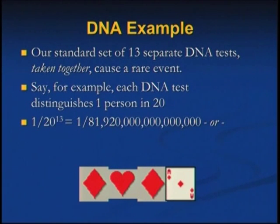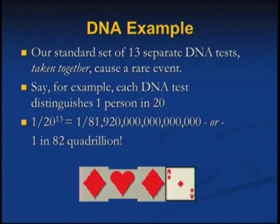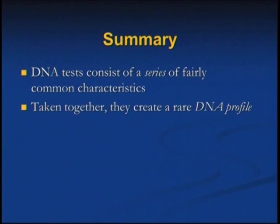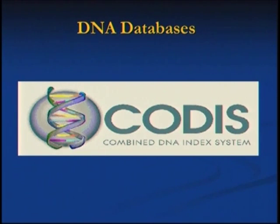Using all 13 DNA loci, taking an average of about one in 20 people having a given genetic marker — like blue eyes or brown hair — you multiply them together and you can get statistics exceeding the 7 billion people in the world. So you can't say it's definitively this person to the exclusion of everybody else, but the statistics can be so high that it is, realistically, a positive identification. The summary is that combining these fairly common individual characteristics creates a rare DNA profile.